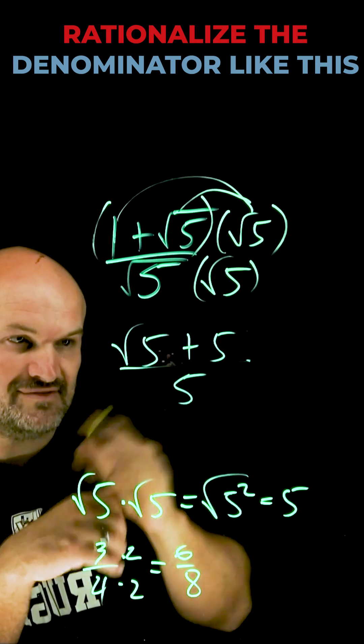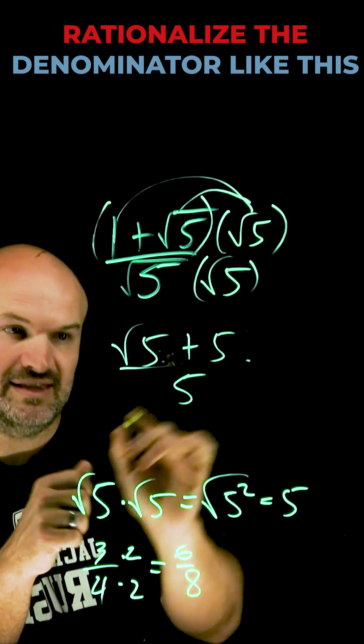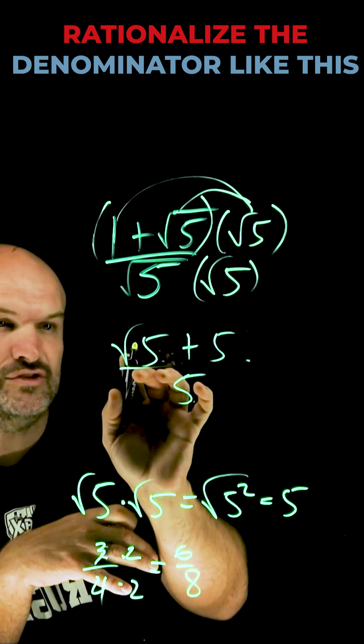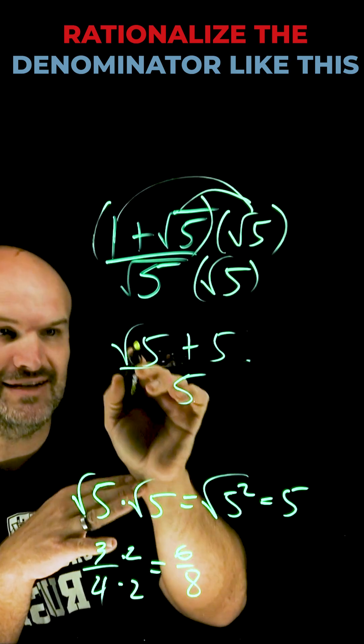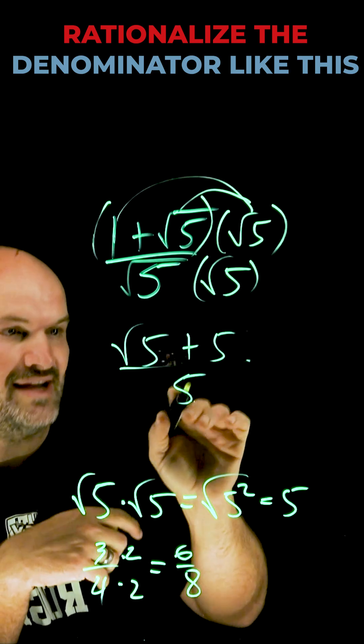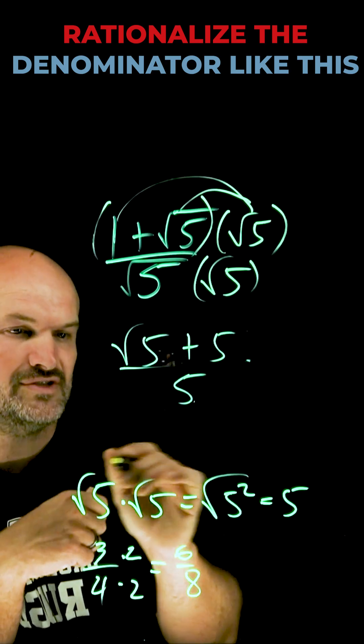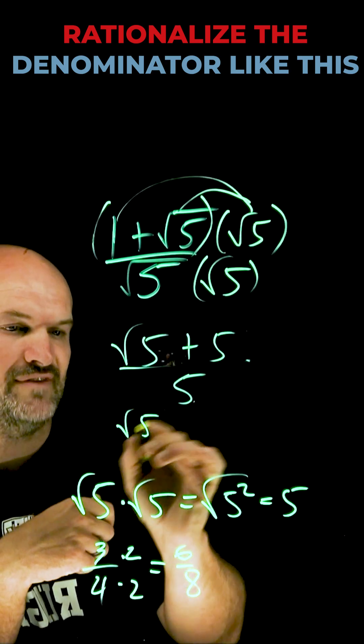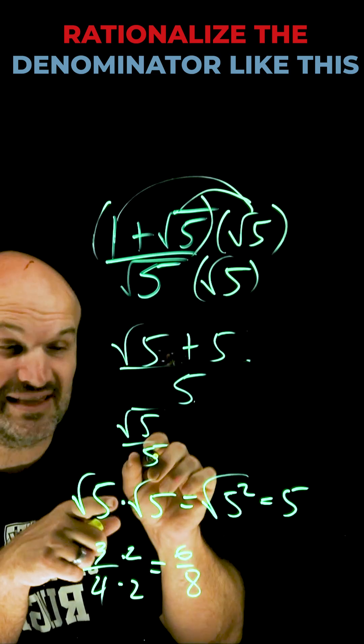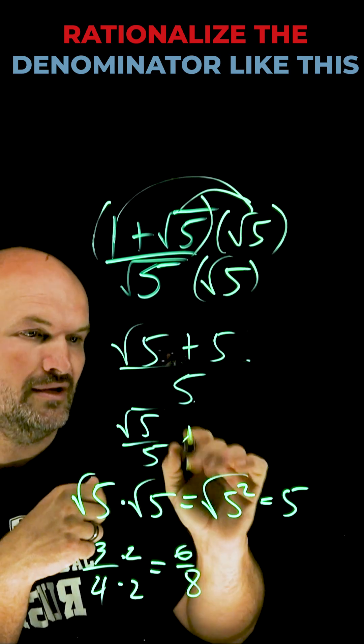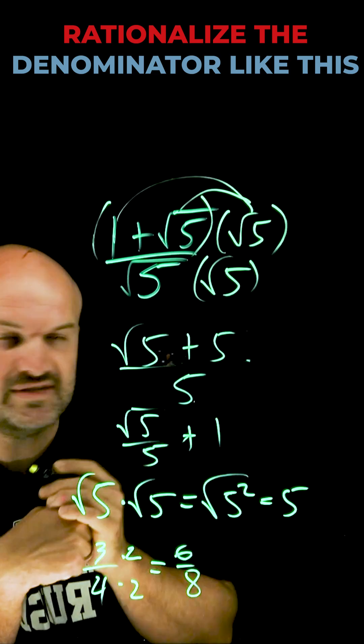Now you cannot just divide out these fives. If you do want to simplify this, you could distribute this five into the square root of five or divide square root of five by five, which does not simplify, and then you could divide the five over five. So therefore I could write a final answer of square root of five over five, because you cannot divide the five into this because it's under a radical, plus five over five, which is going to be a one.